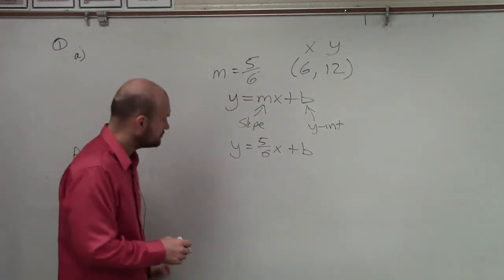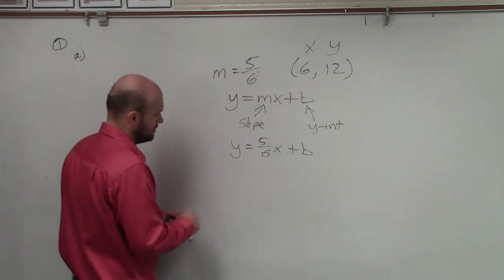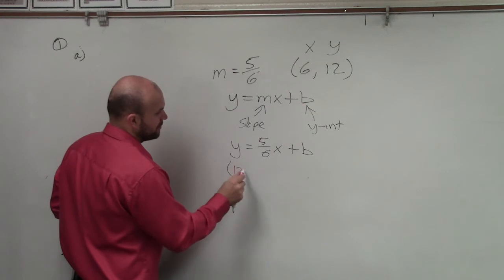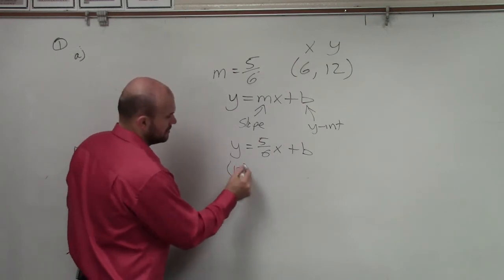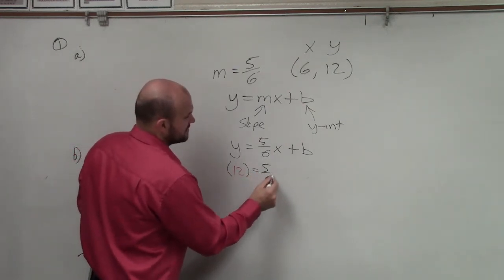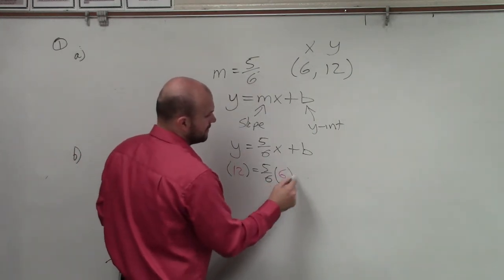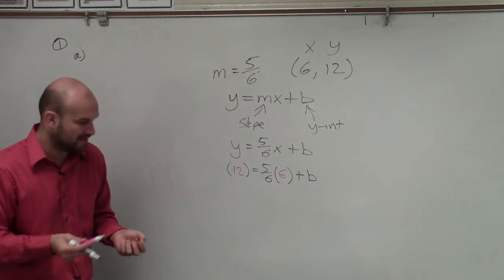So what I do is I write 12, which is my y-coordinate, equals 5/6 times x, or 6, which is my x-coordinate, plus b. Follow me. Now I can solve for b.